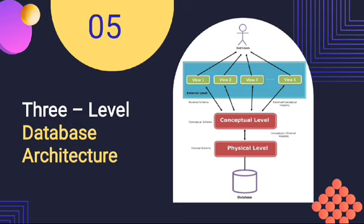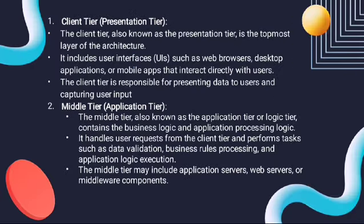Now the last topic: the three-level database architecture. This three-level database architecture consists of three layers: first, external level; second, conceptual level; and third, internal layer. The client tier, also called the presentation level, and external level, also known as the view level. The reason this level is called the view level is because several users can view their desired data from this level, which is internally fetched from the database with the help of conceptual and internal level mapping. The client tier is responsible for presenting the data to the users and capturing user input.